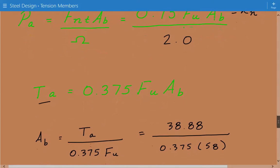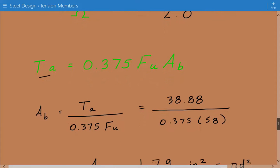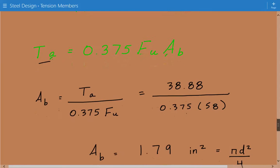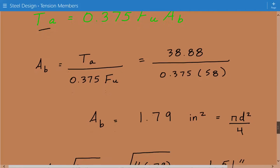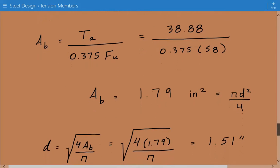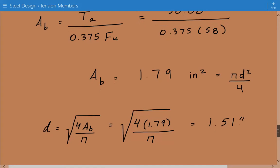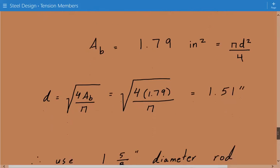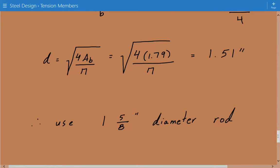And now we just rearrange this equation and solve for AB. And AB is equal to 1.79 inches squared. We set it equal to pi d squared over 4. And d, the minimum required diameter, is 1.51 inches. And for design purposes, we'll say we'll use a 1 and 5 eighths inch diameter rod. So this is the end of this example.